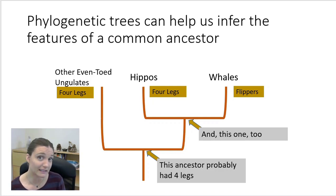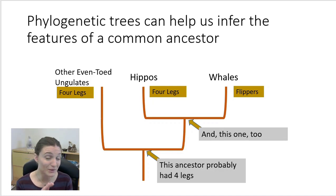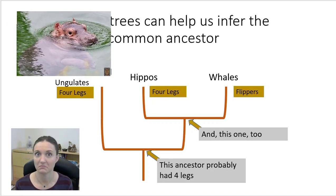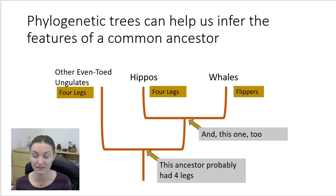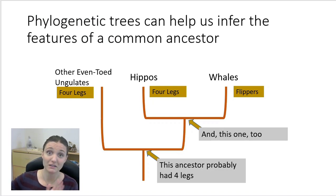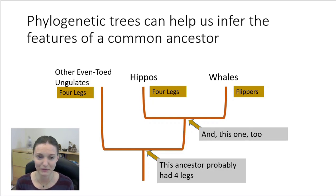DNA analysis, looking at the homologies in DNA, has shown us that whales are actually most closely related to hippos, of all things. But if you think about it, hippos already kind of live mostly in the water, so it's not that much of a stretch to see that one branch of hippos, many millions of years ago, may have branched off and gone another trajectory, living only in the water — and then we get whales.